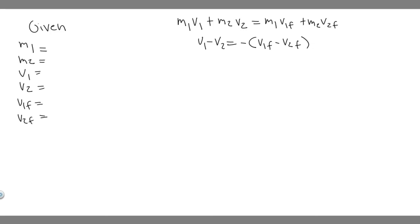Ball one is the moving ball and ball two is the one initially at rest. The moving ball has a mass of 0.22 kg, so M1 = 0.22 kg. It's moving at 7.5 meters per second, so V1 = 7.5 m/s. The second ball is at rest, so V2 = 0 meters per second.